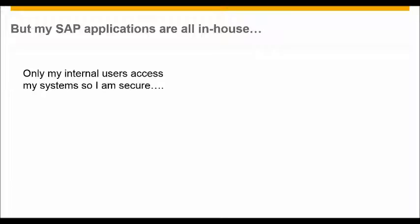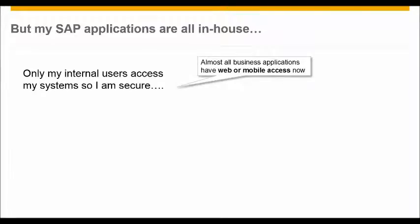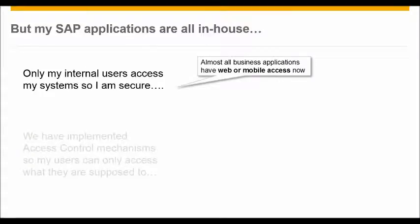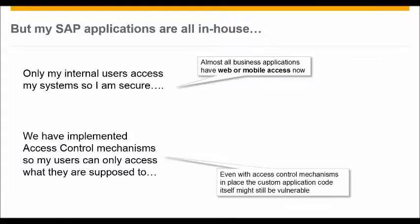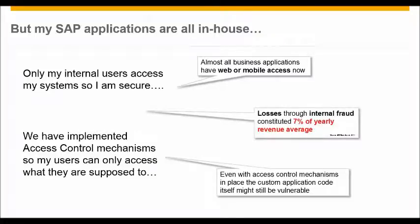What we hear quite often from SAP customers is, 'My SAP applications are all in-house, so only my internal users can access the system.' Well, this has changed dramatically. Since the ECC system, most customers with traditional ERP systems now have web or mobile access. The second argument we often hear is, 'We have implemented access control mechanisms.' But even with access control in place, if the underlying code has security vulnerabilities, an attacker can still breach the system and extract or manipulate data in unauthorized ways.